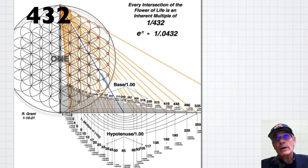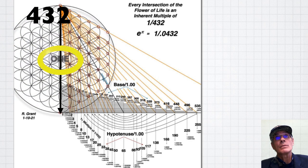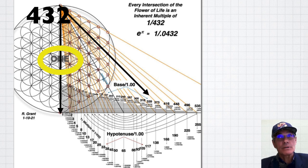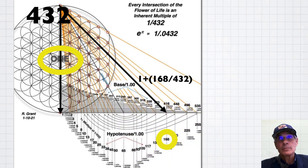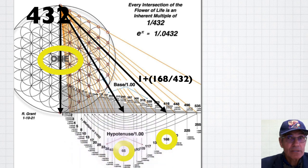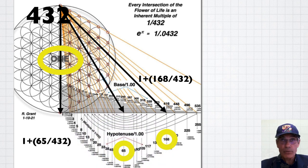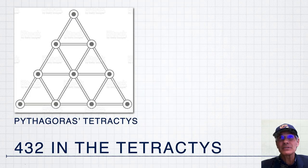Robert Grant has shown that if you take the Flower of Life, this basic sacred geometric construction, and then if you put a circle around there and you take the diameter of that circle to be 1, then the hypotenuse of any one of these intersections with the Flower of Life nodes there is going to come out to being related to 432. 1 plus 168 over 432, to use that one as an example. It's incredible. 432 is built into the essence of the universe.